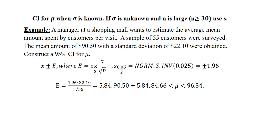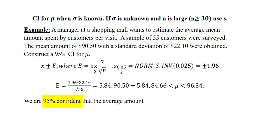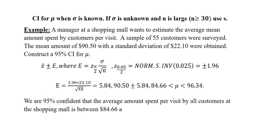So I will be adding this to the sample mean to get the upper limit and subtracting from the sample mean to get the lower limit. As a result, my lower limit will be 84.66 and the upper limit will be 96.34. I can thus conclude that we are 95% confident that the average amount spent per visit by all customers at the shopping mall is between $84.66 and $96.34.